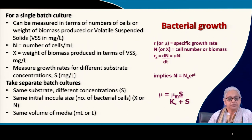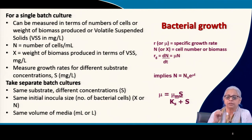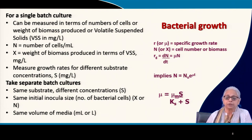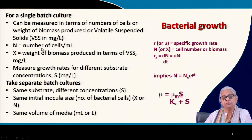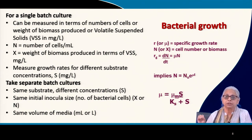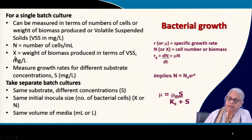In a single batch culture you measure either the number of cells or the weight of biomass produced. If measuring biomass weight, you filter a small amount of media, measure volatile suspended solids (VSS), and express it in milligrams per litre. For number of cells via plate counts or microscopy, you use cells per ml. So N stands for number of cells per ml; X stands for weight of biomass as VSS.